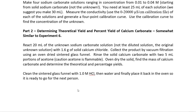In part two you're going to use the concentration you found in part one to determine the theoretical yield and limiting reagent as you form calcium carbonate. This is somewhat similar to experiment six where you formed magnesium carbonate. You're going to react 20 milliliters of the original unknown sodium carbonate solution — not the diluted one — with 1.6 grams of solid calcium chloride. When you mix these two things together, calcium goes with carbonate and you end up with calcium carbonate, commonly referred to as chalk.